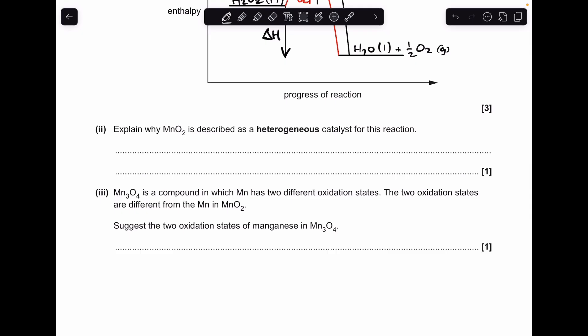Next part, explain why MnO₂ is described as a heterogeneous catalyst for the reaction. Well, if you think about MnO₂, it's a solid, whereas the reactant, the hydrogen peroxide, is a liquid. So we've got different physical states, so it's a heterogeneous catalyst.